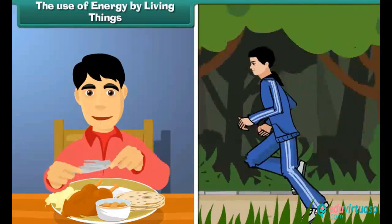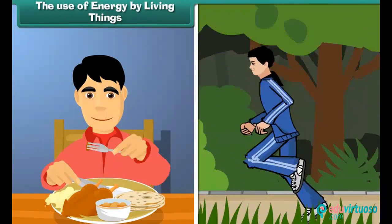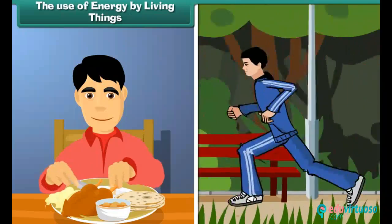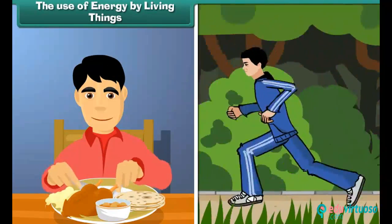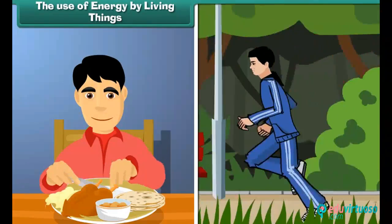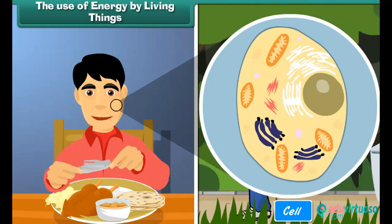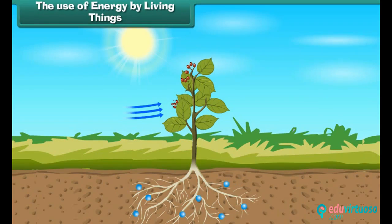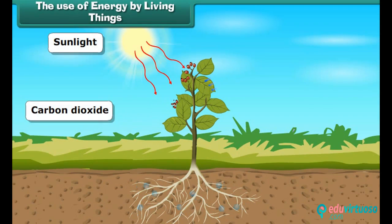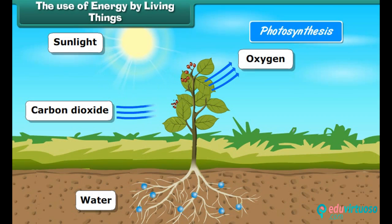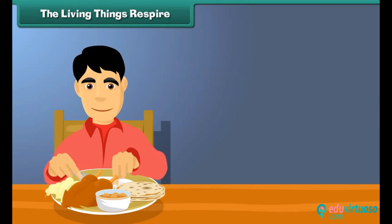Living beings constantly require energy — not only to perform various body activities, but also to overcome entropy, the degree of disorder in a system or tendency to randomness. The source of energy is food, which is required by every cell. Food is prepared by plants through the process of photosynthesis, which requires sunlight, carbon dioxide, water, and chlorophyll. Living things also respire — they require oxygen to get energy from food.